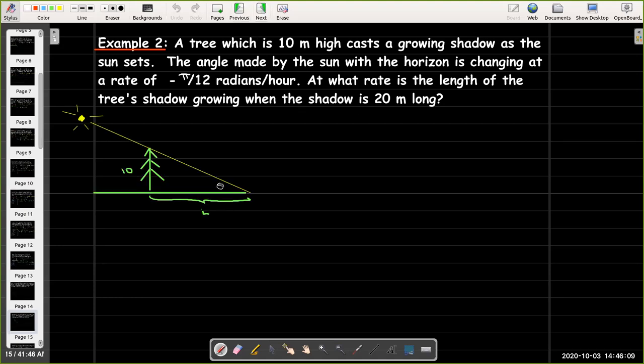At what rate is the length of the tree's shadow growing when the shadow is 20 meters long? So, here's our picture. Theta is the angle made by the sun with the ground or with the flat horizon. The tree is 10 meters high. And we'll call the distance, or the length of the shadow, we'll call the length of the shadow, L.